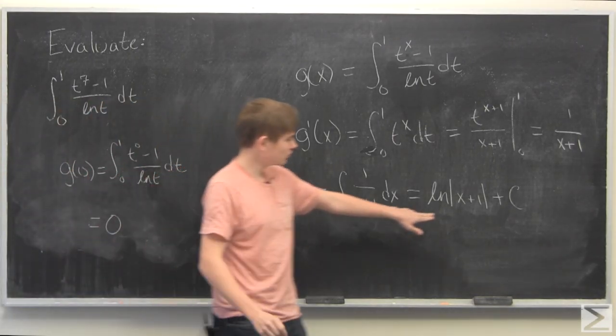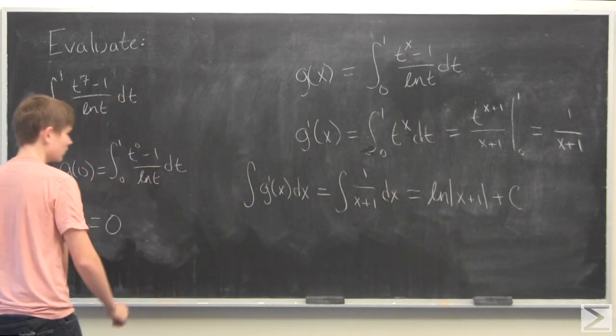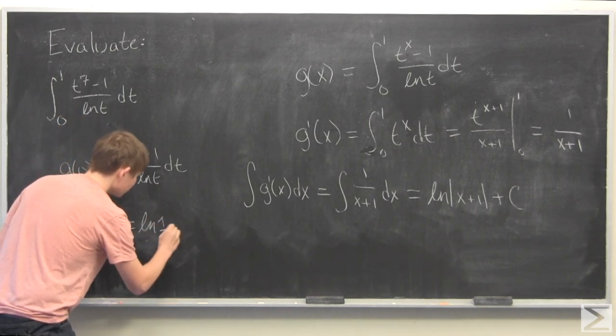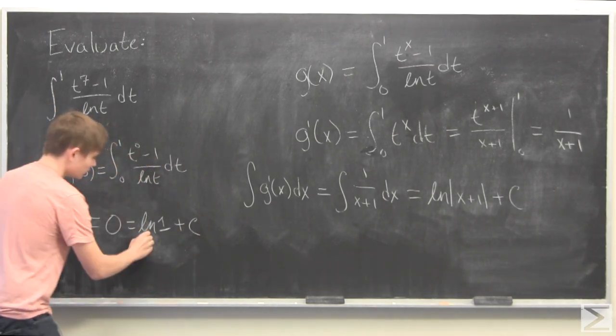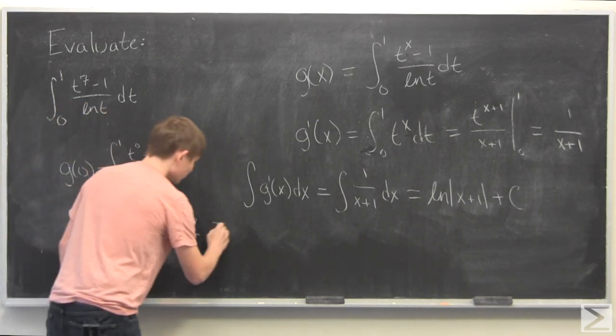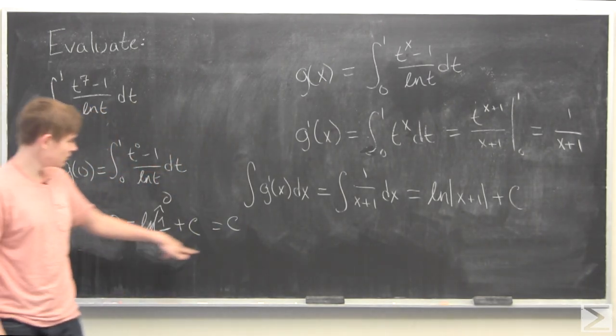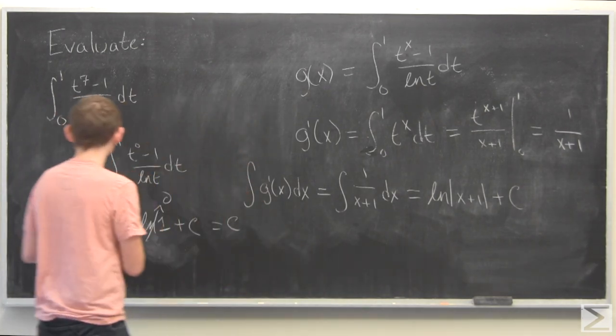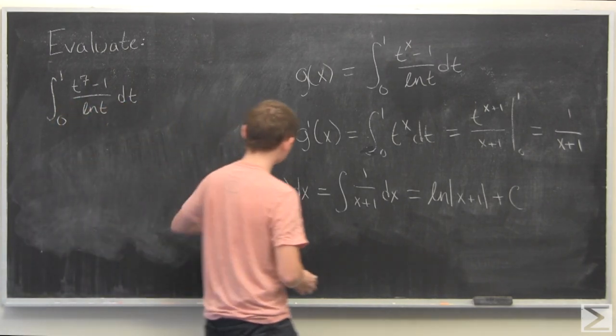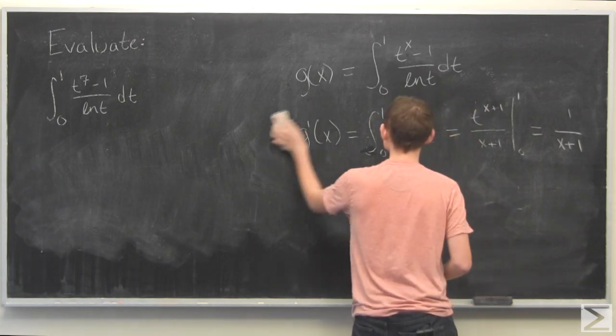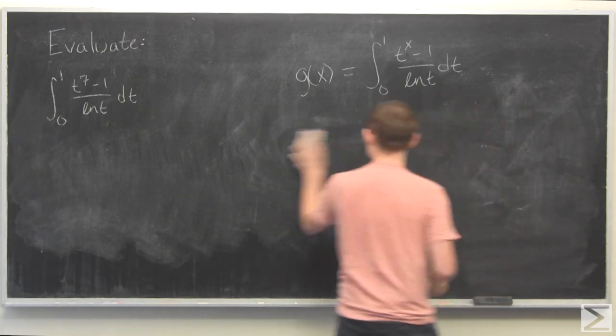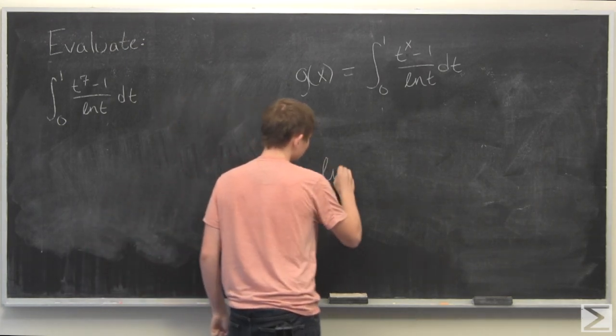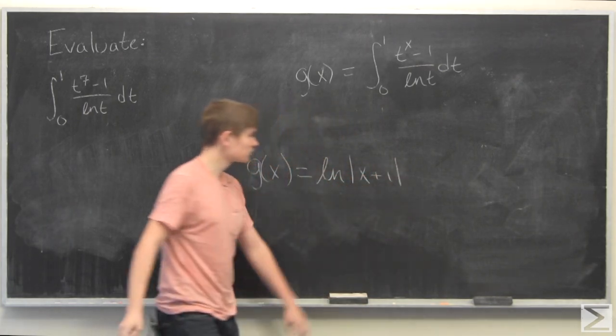Now if we plug in 0 into this definition of g of x, we find that this is equal to ln of 1 plus c, but the natural log of 1 is 0. So this is equal to c. We found that c, the constant, is equal to 0, which means that we have the function g of x now.